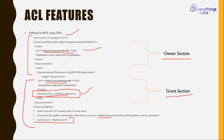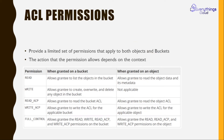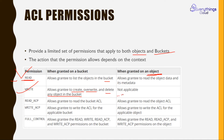By default you can attach up to 100 grants per ACL. As we know, we can apply permissions on both the object and the bucket. Looking at the permissions table: if you give read access, the grantee is allowed to list objects in the bucket. For write access, you allow the grantee to create, overwrite, and delete any object in the bucket, but write access is not applicable at the object level.